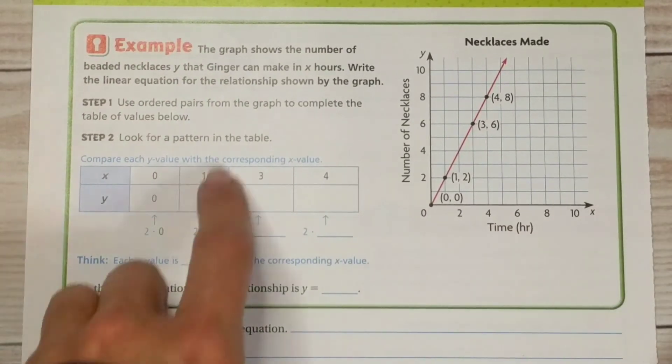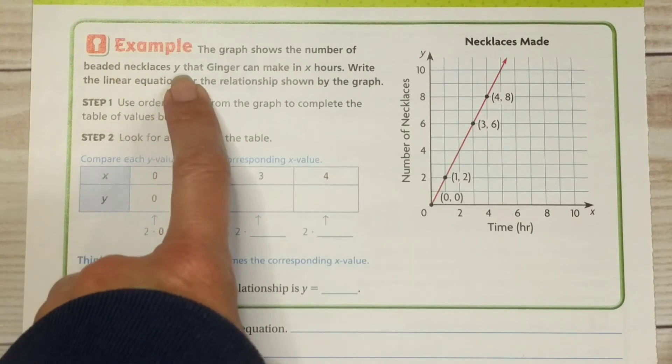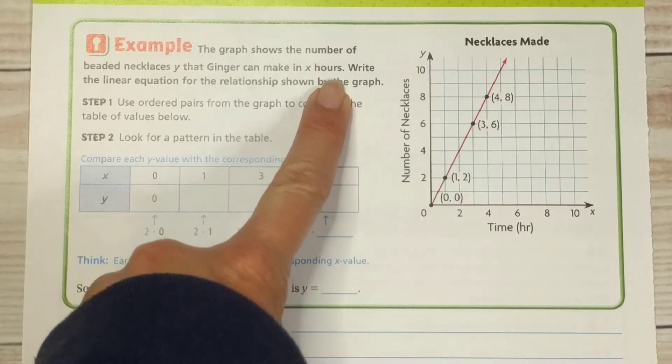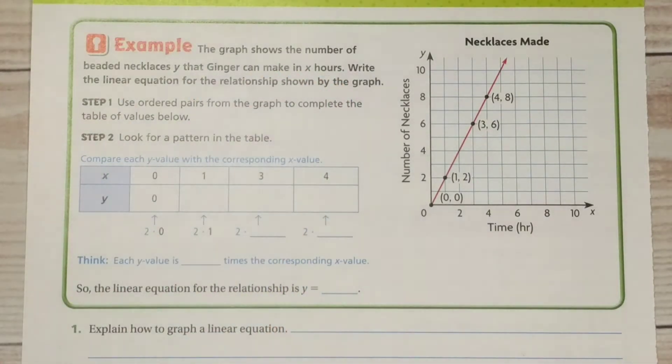Let's take a look at the next page. Example. The graph shows the number of beaded necklaces, y, so this is our dependent variable, that Ginger can make in x hours depending on how long she can work. Write the linear equation for the relationship shown by the graph.